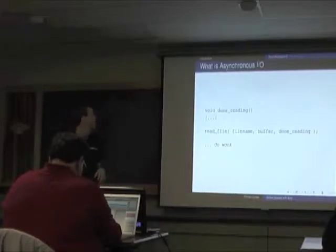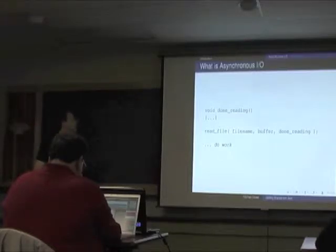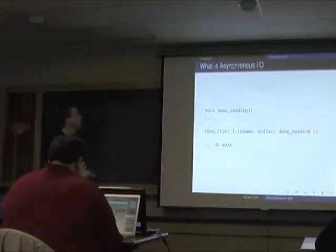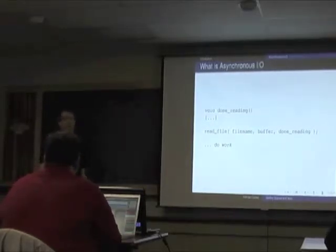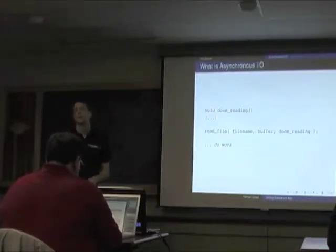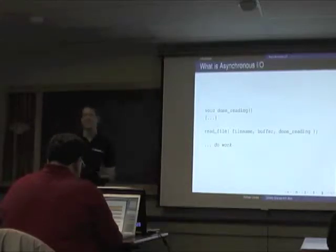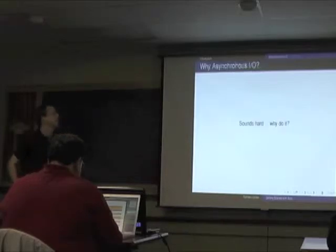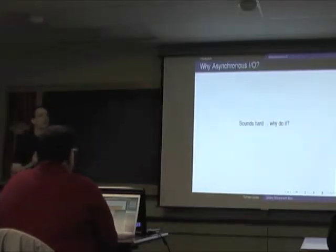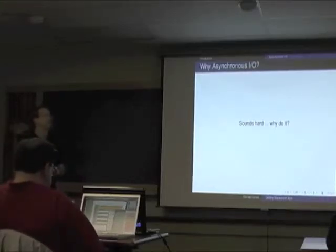What might this look like in code? You have a function called read_file. It takes a file name, a buffer, and a handler to call when it's done. It starts the process of reading the file — it doesn't wait for the file to get read, it just starts that activity, does some work, and eventually the handler gets called. Now if you're thinking, you might say: I've started something someplace and later, likely in some other thread, I'm going to get notified. This is going to start getting a little complicated. It sounds hard, so why?